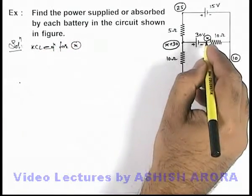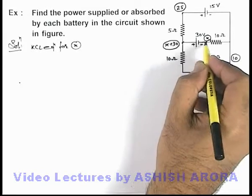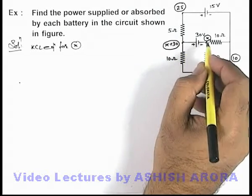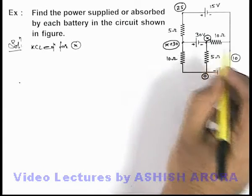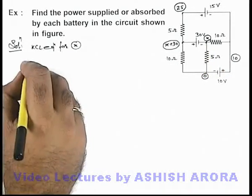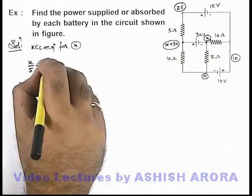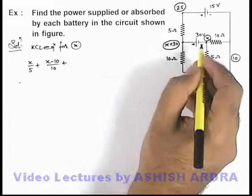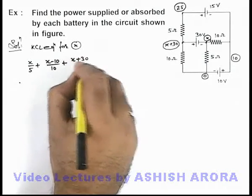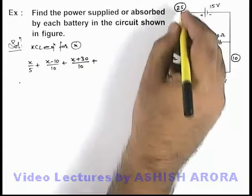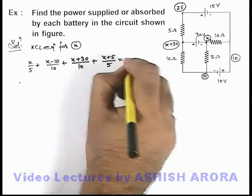Here we can see there are 2 resistances connected from this junction where potential is x, and on the other side there are 2 more resistances connected. Applying Kirchhoff's Current Law, the total sum of outgoing currents from this junction must equal zero. So the current through the 5 ohm resistance is (x minus 0) by 5, plus the current in this direction is (x minus 10) by 10, plus the current here is (x plus 30) by 10, plus the current in this direction is (x plus 30 minus 25), which is (x plus 5) divided by 5, equals zero.